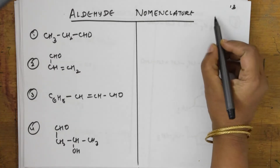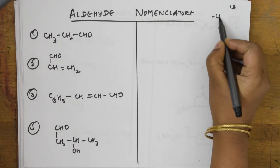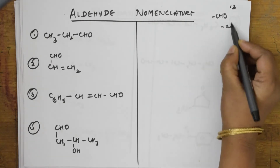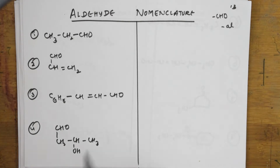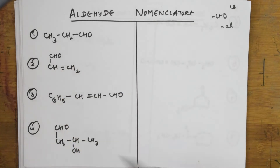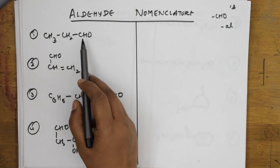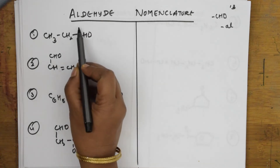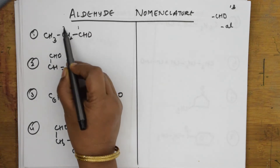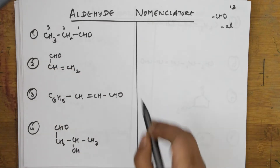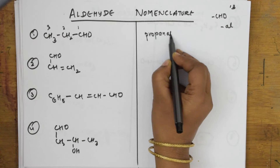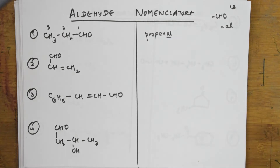When we speak about aldehyde, the functional group is CHO. The suffix we use is '-al'. In aldehyde or carboxylic acid, the functional group carbon should be given the first preference — it should be named first. So one, two, three — this is propan-, so we write propan-al. You take out the 'e' and write 'al'.